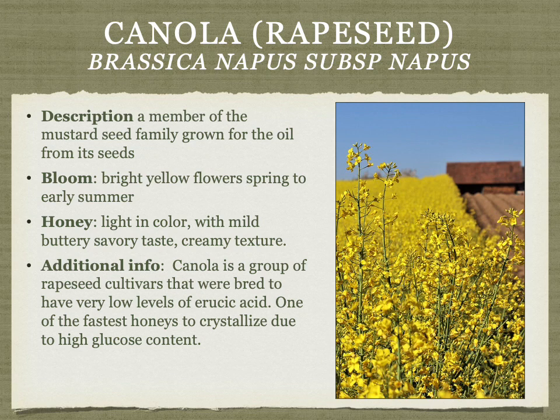Canola, a type of rapeseed grown for its oil, was bred to remove erucic acid, which is toxic in other rapeseed cultivars. The honey is very light yellow, mild, buttery, and savory with a creamy texture. It's one of the fastest honeys to crystallize due to high glucose content, which creates challenges for beekeepers — if supers are left in the hive too long, the honey can crystallize in the comb and become nearly impossible to extract.